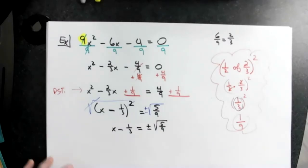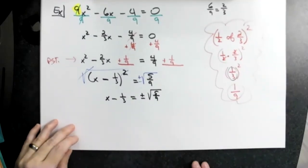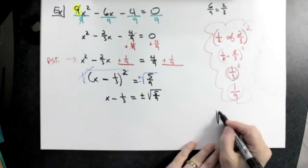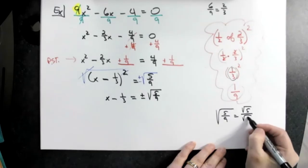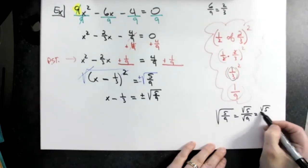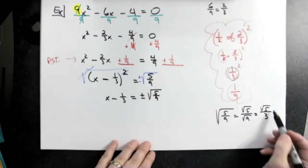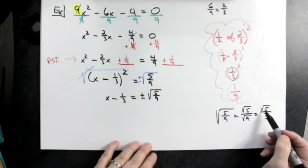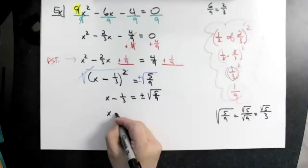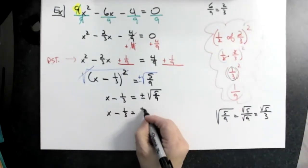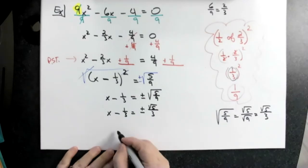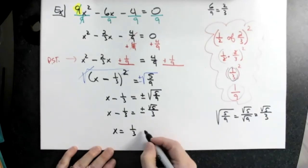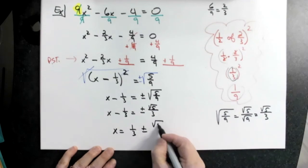Can I simplify square root of five ninths? Bottom's a perfect square. I'll do it over here so we don't clutter this up. Square root of five ninths—I can break it up into a little radical on top, a little radical on the bottom. That'll give me square root of five over three. So this does simplify to square root of five over three. Let's go ahead and put that in: plus or minus square root of five over three. Then at this point, all I've got to do is add one-third to both sides. So x equals one-third plus or minus square root of five over three.